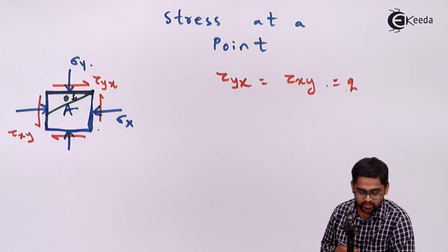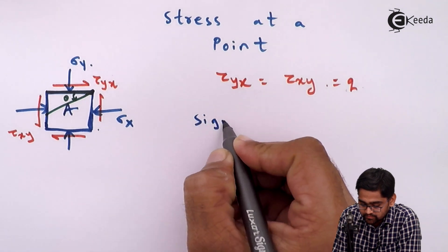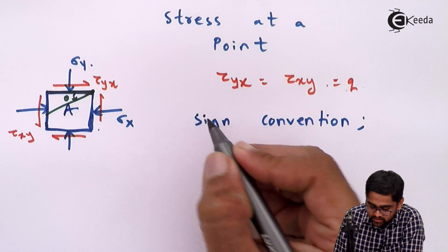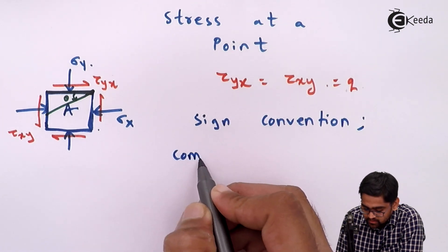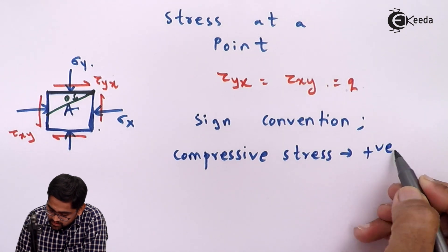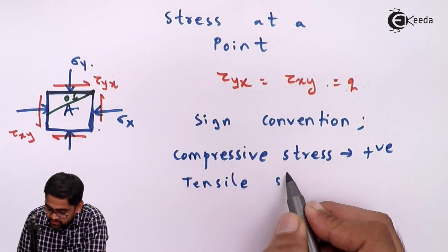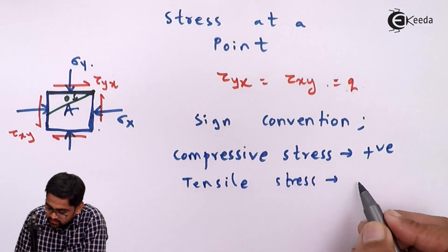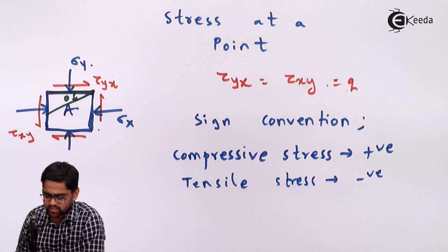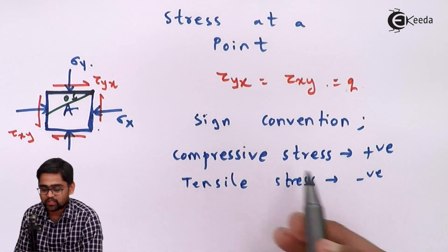Before going into further discussion, we must introduce the sign conventions. In soil mechanics, we follow this sign convention: we take compressive stress as positive and tensile stress as negative, because soil fails in tension in a very brittle manner and compressive stresses are the ones that typically occur. Tensile stress will not occur at all.